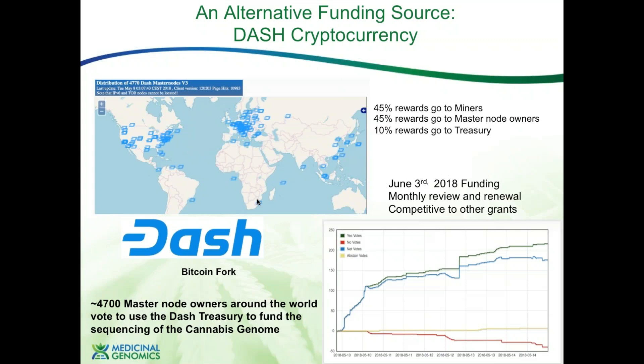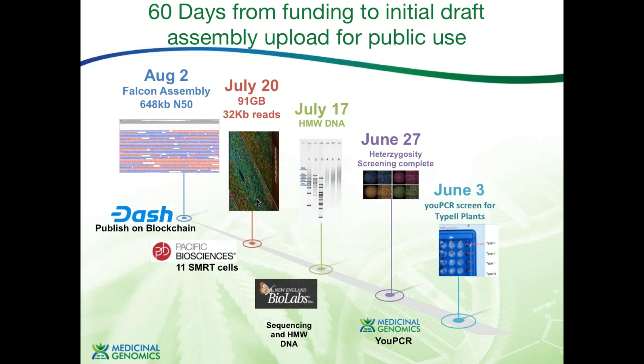This is a challenging way to get funding because they can pull it at any 30 days — they revote monthly and you can get voted off in 30-day increments. So we tried to accomplish this as quickly as possible. We started on June 3rd last year, screening cannabis plants for those that synthesize both THC and CBD. You're going to hear a lot about three cannabinoids today: THC, CBD, and CBC, though there are probably 90 or more in the plant worth paying attention to.